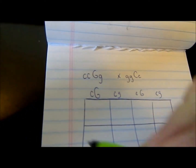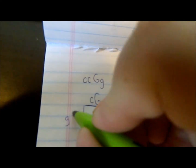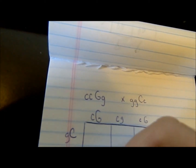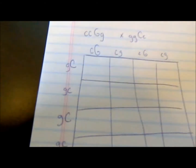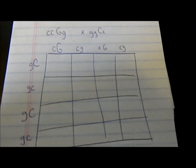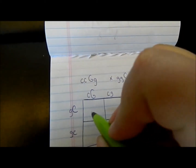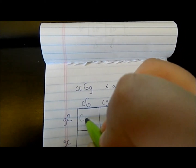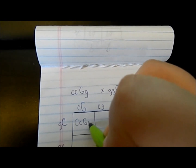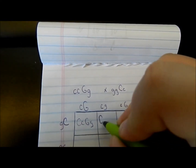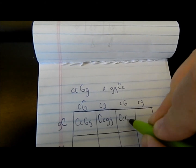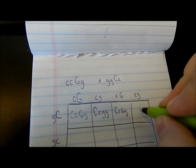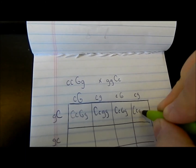Then you do the same thing for the other side. So it's going to be: little g big C, little g little c, little g big C, little g little c. And then you just go through and write all the letters that are going to be in each cell. So you've got: big C little c big G little g; big C little c and two little g's; big C little c big G little g; and big C little c little g little g.